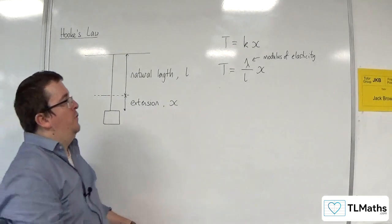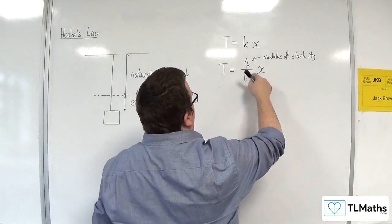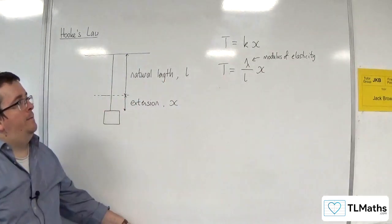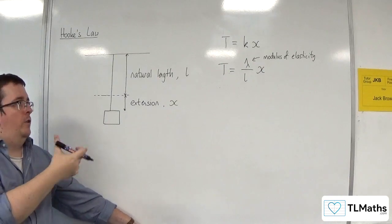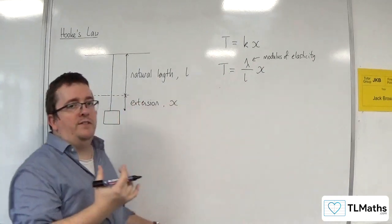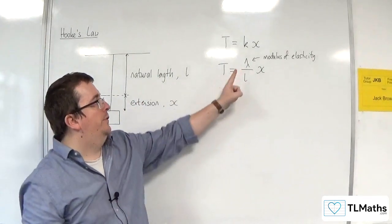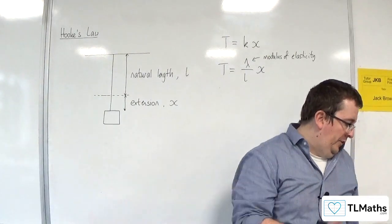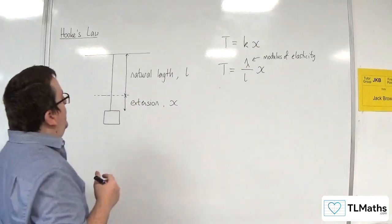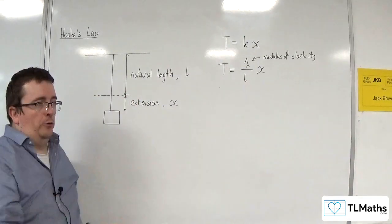And so, because you've got that length there, L, you've got this length here, X. OK, so dimensionally they knock each other out. They're not going to cancel one another out, but dimensionally they do, leaving you with newtons, which is what you want your tension to be in anyway. OK, so this is what Hooke's Law is about.